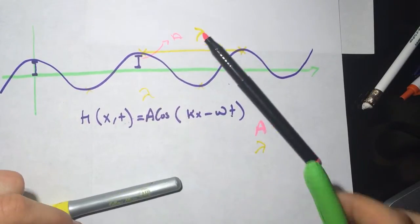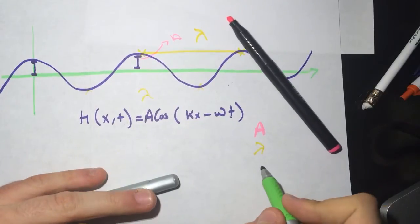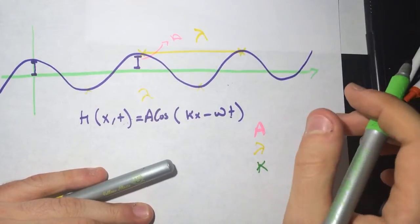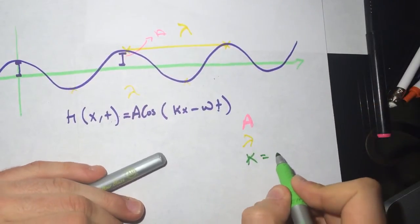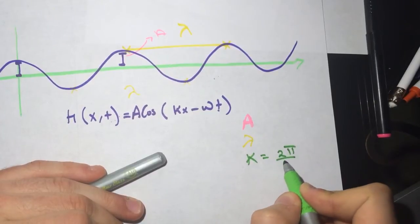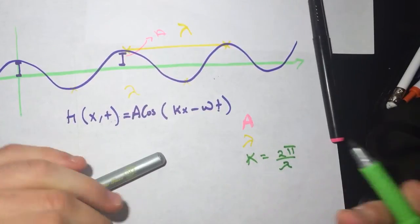And what else do we need? What is the k? So k is the wave number. And k is equal to two pi divided by lambda.